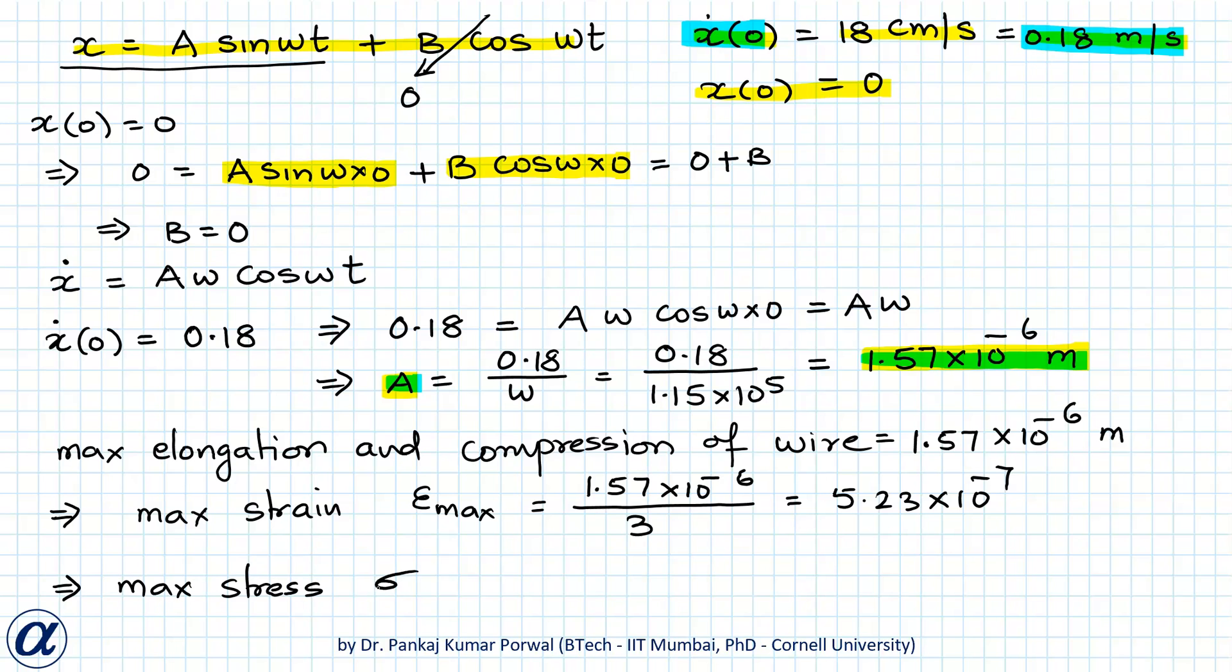And from this I can get max stress σ max equals to E ε max. E I'll take 210 GPa so 210 into 10 to the power 9 into 5.23 into 10 to the power minus 7. That will be equals to 109.9 into 10 to the power 3 newton per meter squared.